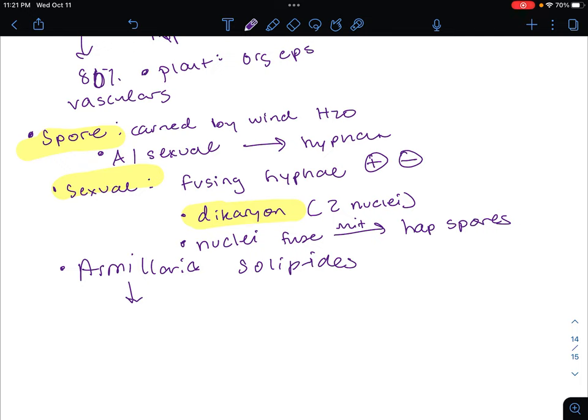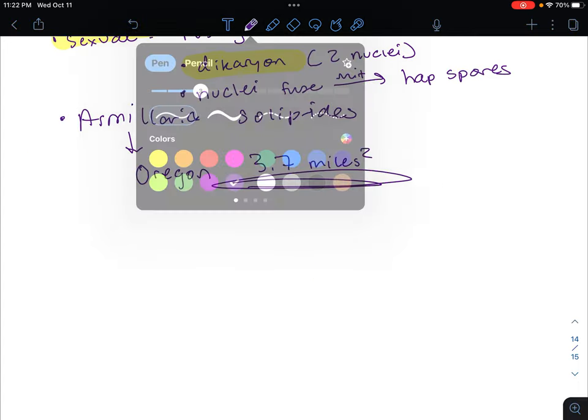The world's largest fungus is known as Armillaria solidipes. This is in the Malheur National Forest in Oregon. They've tested different sections of the forest - it has the same DNA. The organism itself covers 3.7 square miles. That is all one organism there, this Armillaria solidipes fungus.